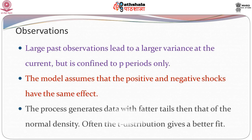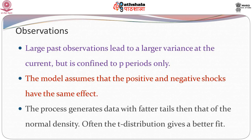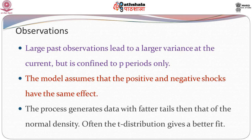The process generates data with fatter tails than the normal density. Often the t-distribution gives a better fit. As we will see, the distribution is generally leptokurtic — the underlying process distribution is not mesokurtic, and hence the normal assumption may not always be applicable. The t-distribution, being leptokurtic, very often gives a better fit.